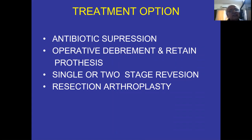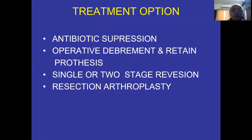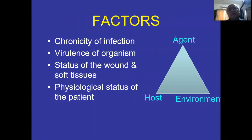What are the treatment options once infection is suspected? Options are: antibiotic suppression only; operative debridement and retaining the prosthesis when within three weeks; single stage or two stage. Single stage is recommended by Endo-Klinik. Two stage is the commonest and gold standard which we follow in this country. Resection arthroplasty is the last resort — that is actually defeat of a surgeon.